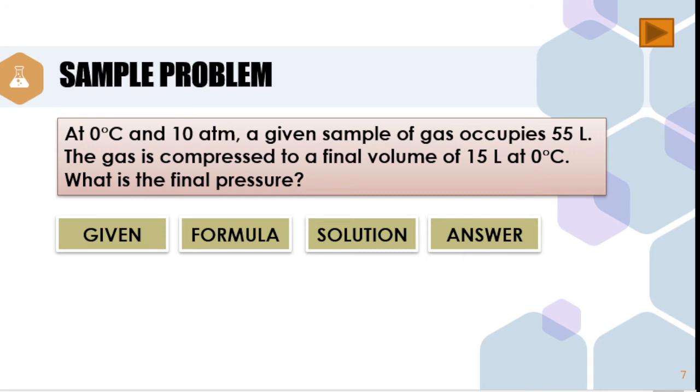Let us begin with the given. Based on the problem, our initial pressure or P1 is equal to 10 atmospheres. Our initial volume is equal to 55 liters. Our final volume or V2 is equal to 15 liters. Therefore, the missing variable in our problem is the final pressure or P2.